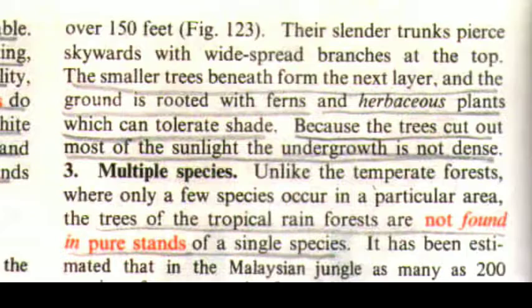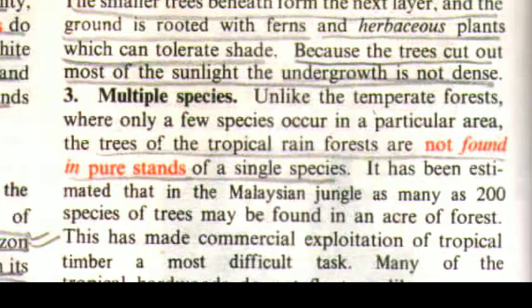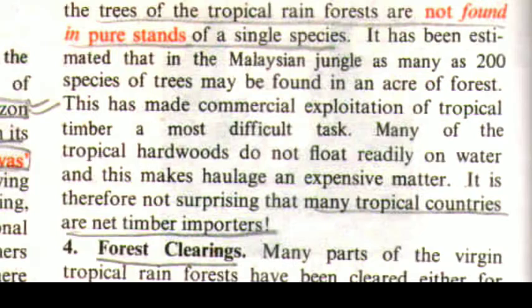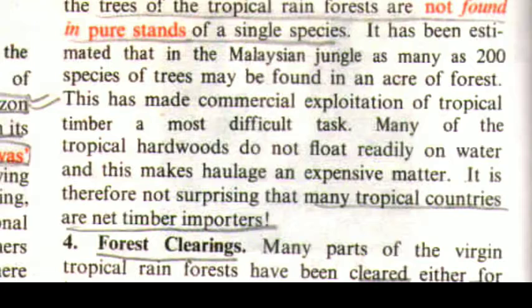The third characteristic feature is multiple species. Unlike the temperate forest where only a few species occur in a particular area, the trees of the tropical rainforest are not found in pure stands of a single species. It has been estimated that in the Malaysian jungle as many as 200 species of trees may be found in an acre of forest. This has made commercial exploitation of tropical timber a most difficult task. Many of the tropical hardwoods do not float readily on water, making haulage an expensive matter.